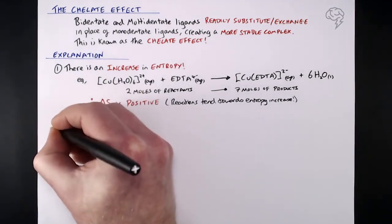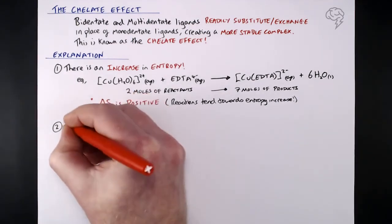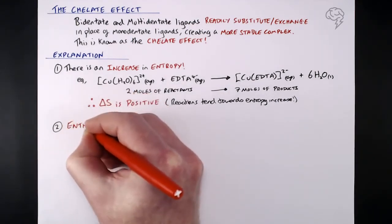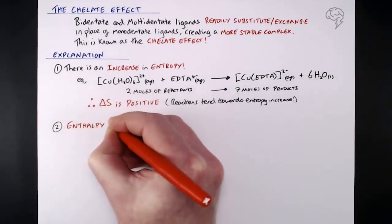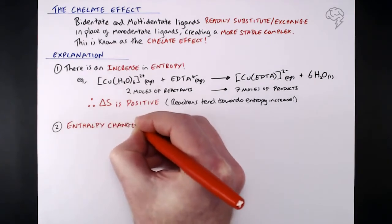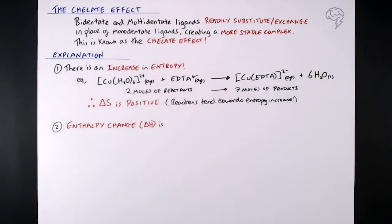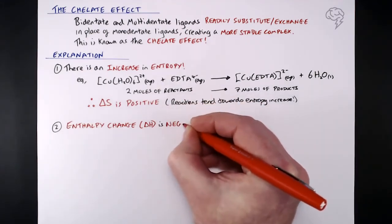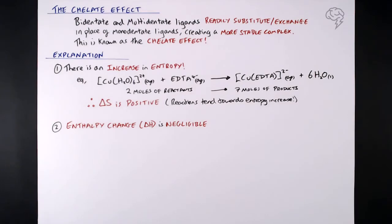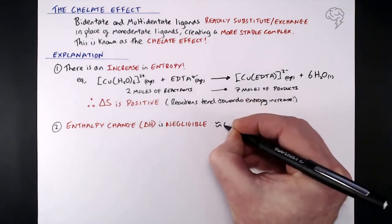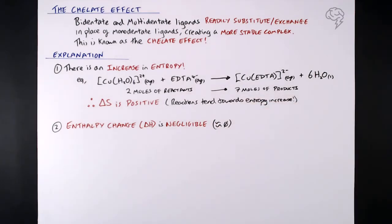The second really important part here is enthalpy change. Because if you think back to Gibbs free energy, then there's lots of things going on to make, to describe or explain why a reaction is feasible or not. Enthalpy change here, or delta H, is negligible. Now what I mean by that, it's pretty much about zero. There's hardly any enthalpy change that goes on when this ligand substitution reaction happens, when you're swapping out six ligands for six ligands.